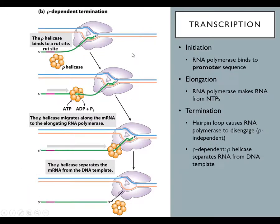Other genes have proteins that recognize certain sequences, either on the DNA or on the RNA. This is called Rho-dependent termination because it requires a protein called Rho helicase. Rho helicase recognizes a certain sequence on the mRNA, and once it binds there, it starts moving toward the three prime end of the mRNA. When it gets there, it disassembles the RNA polymerase from the DNA, and that stops transcription.